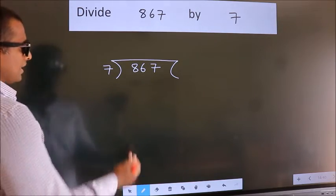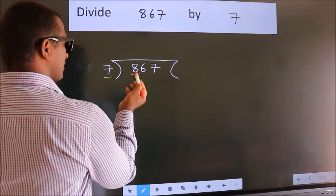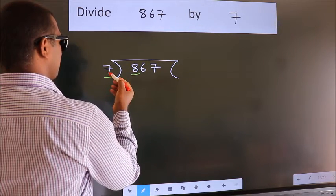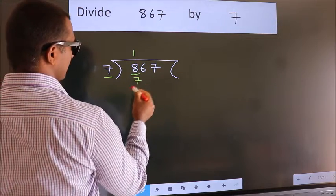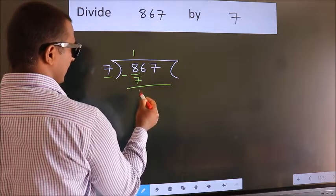Next. Here we have 8, here 7. A number close to 8 in the 7 table is 7 once, which is 7. Now we subtract and get 1.